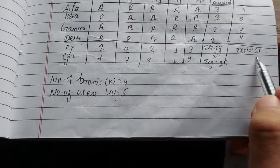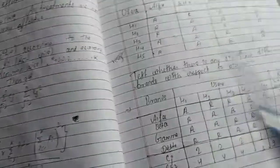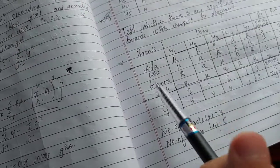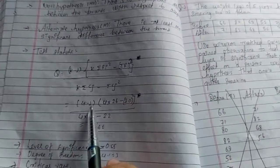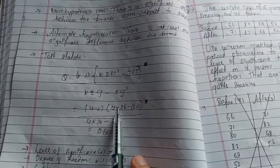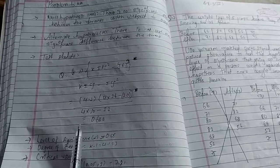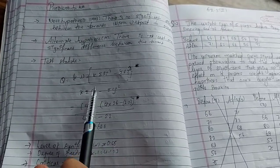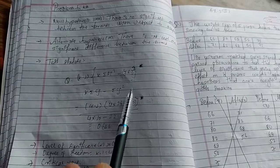The computed value: summation of R-i squared equals 26. K equals 4 (number of brands), so degrees of freedom K minus one equals 3. We apply the Q formula using the summation of C-j and C-j squared from the table to get the calculated Q value of approximately 0.1666.